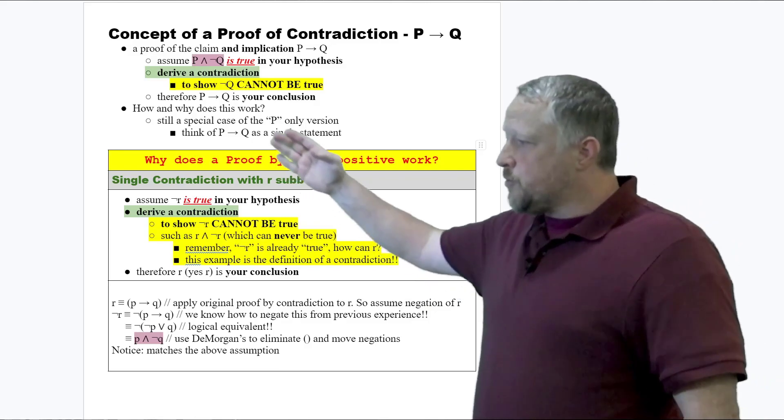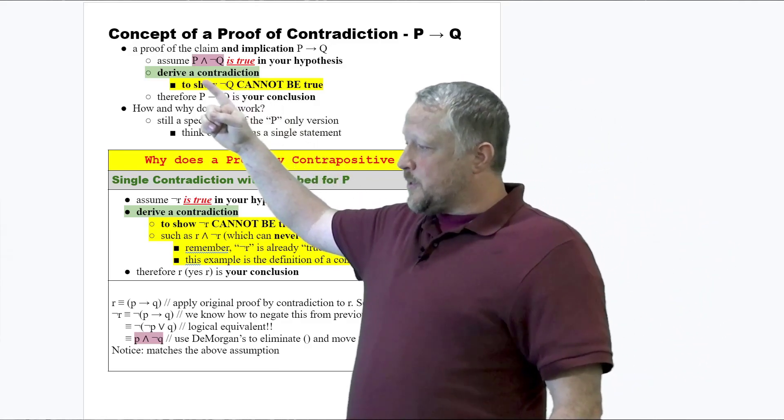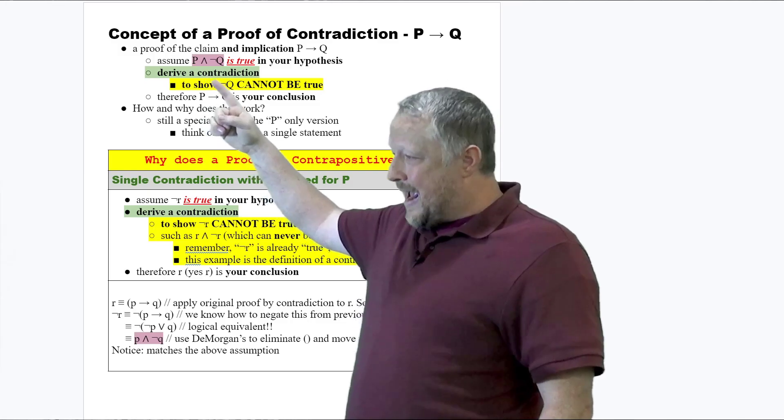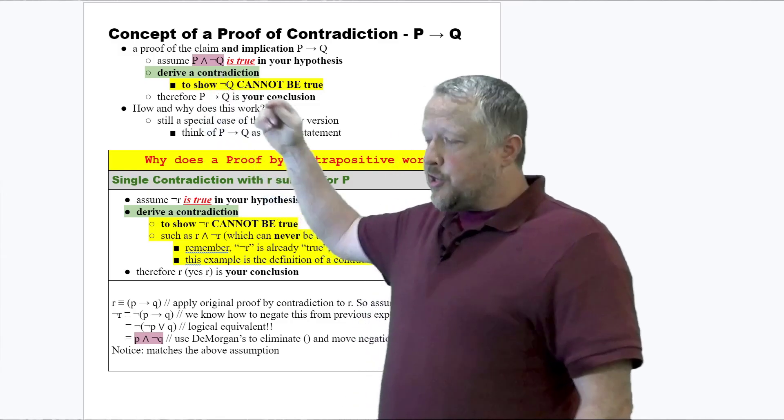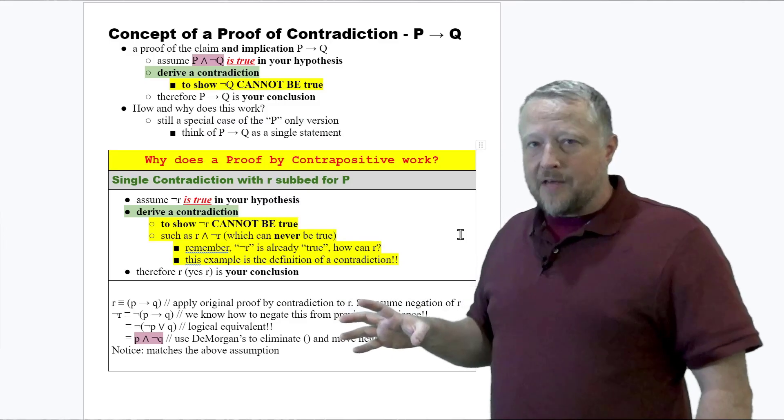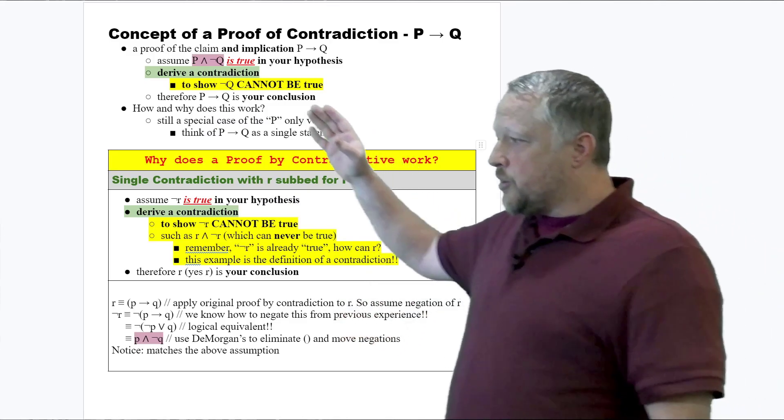We're still going to assume, but be careful, it's P is still true and negated Q is true in your overall hypothesis. And now we're going to go to the contradiction.